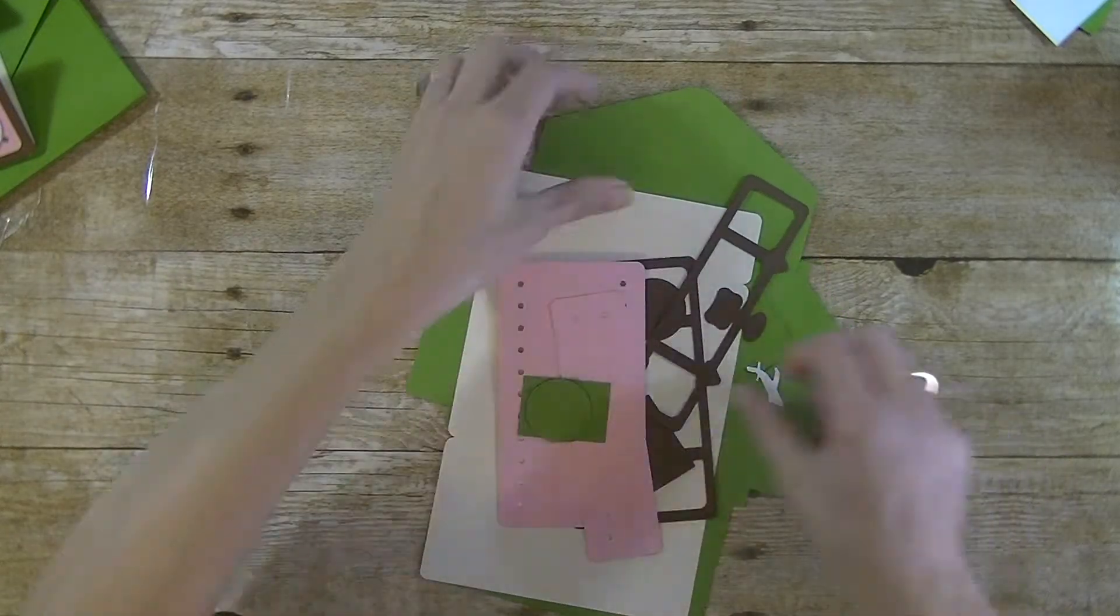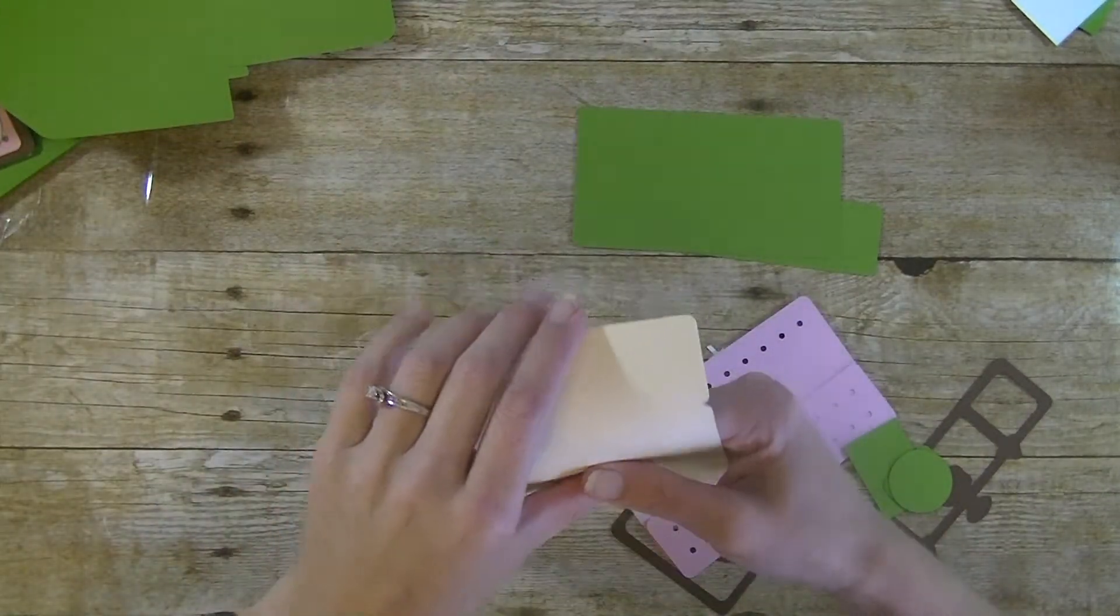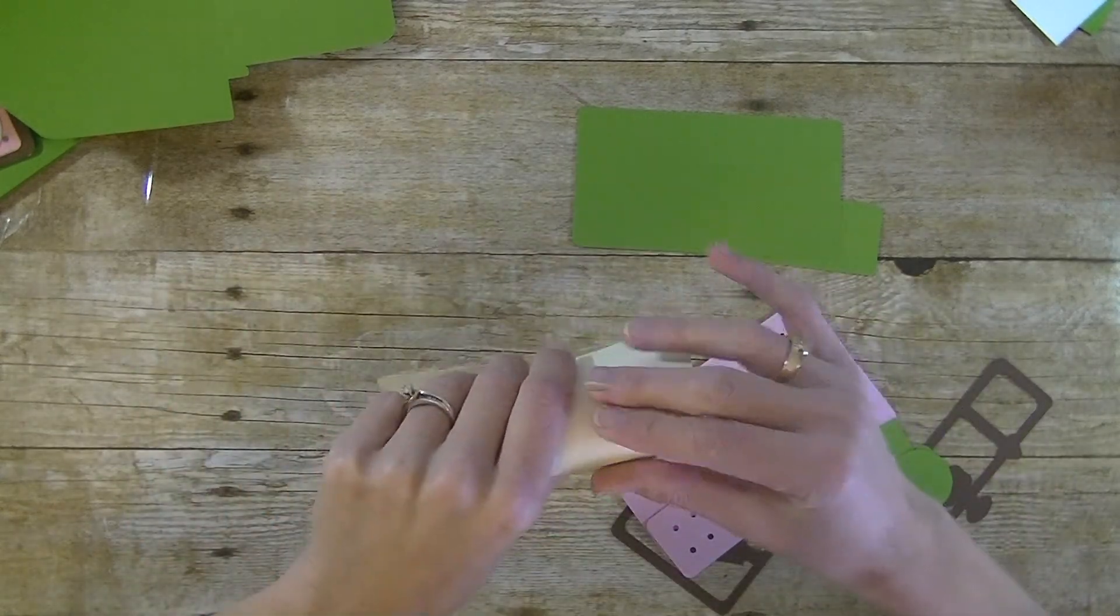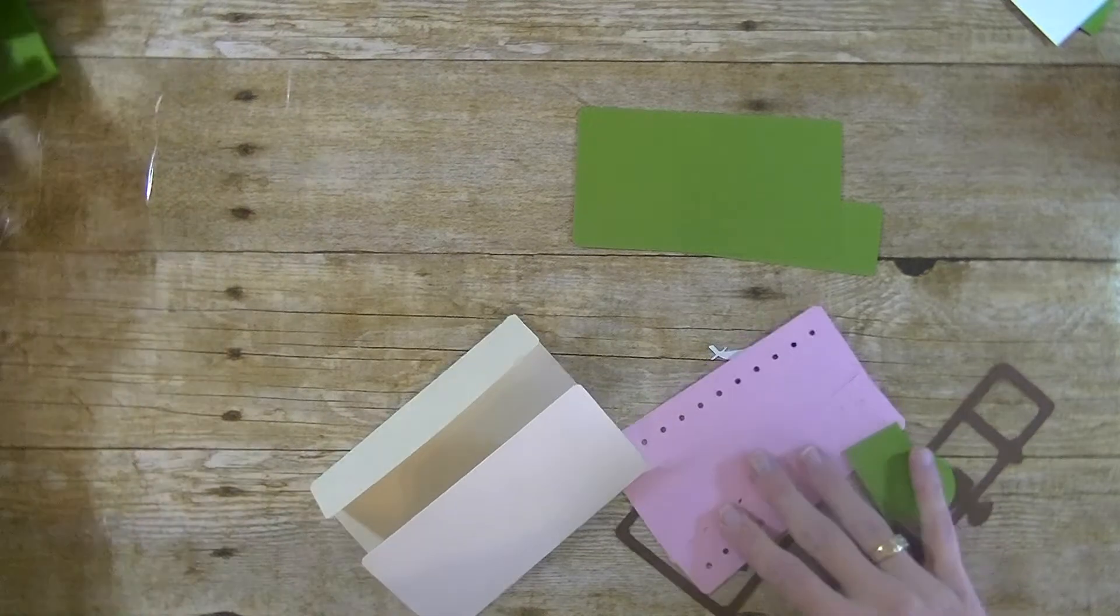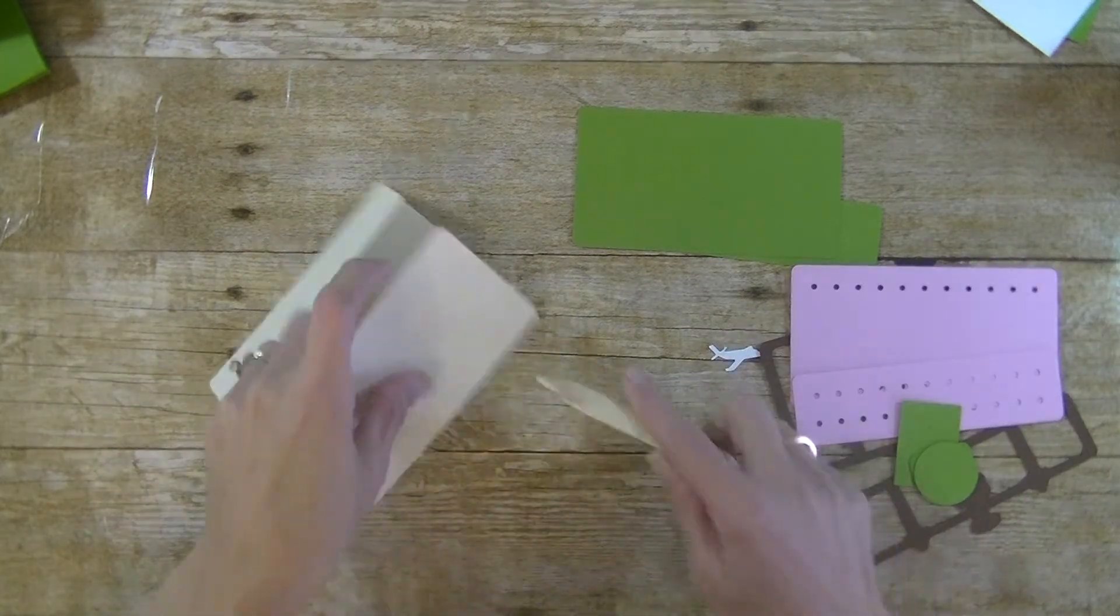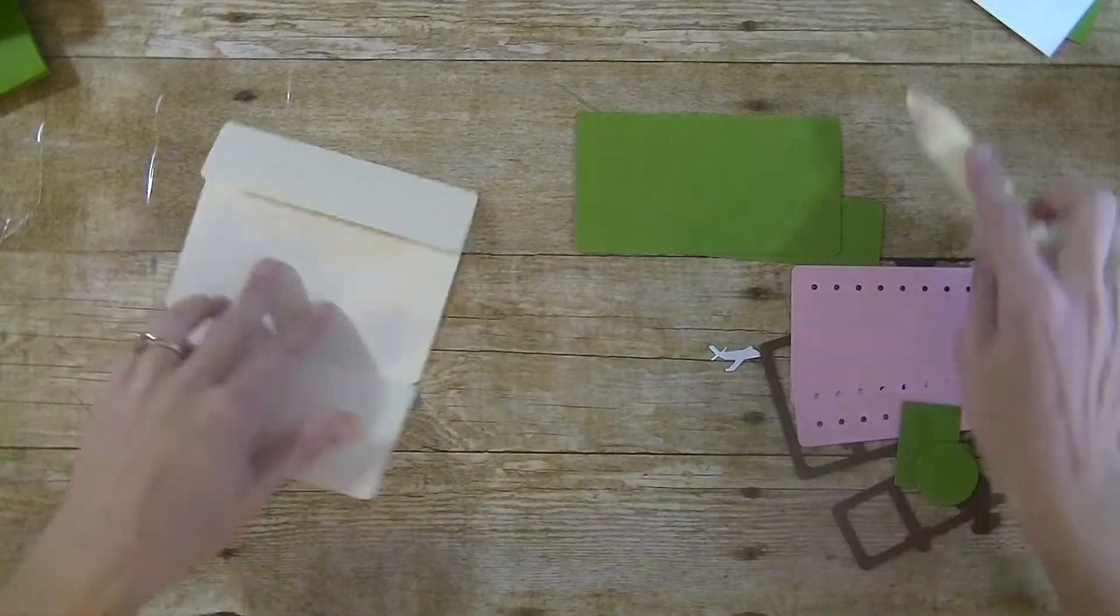We are back. Everything is cut out. We're going to set our envelope aside for the moment and work on the actual card. Go ahead and fold on your score marks. I'm going to take our bone folder and give that a nice crease.